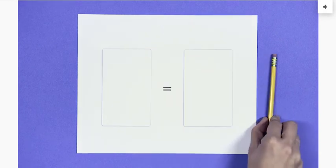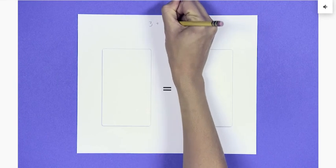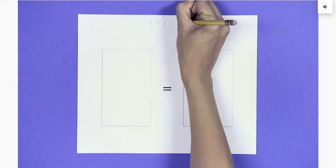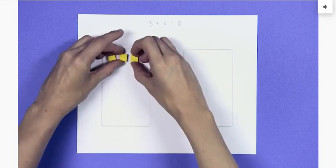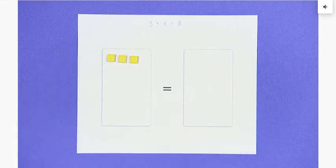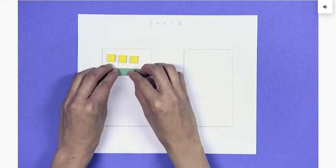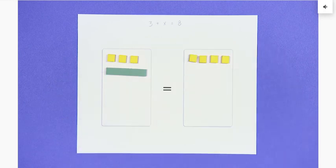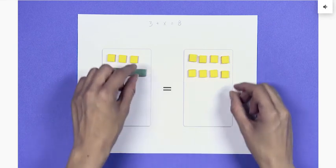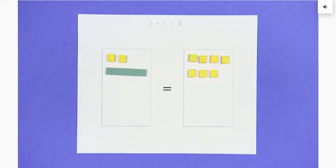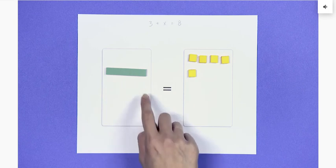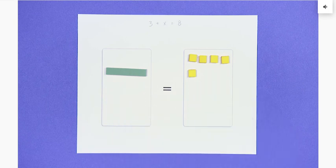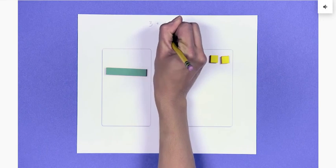Let's try another example. Find the value of x for the equation 3 plus x equals 8. To model the equation, place three one-tiles and one x-tile on the left side of the mat. Next, place eight one-tiles on the right side of the mat. To isolate the variable, or the x-tiles, remove the same number of one-tiles from each side of the mat until the x-tile is by itself. There are five one-tiles remaining on the right side. So, x equals 5.